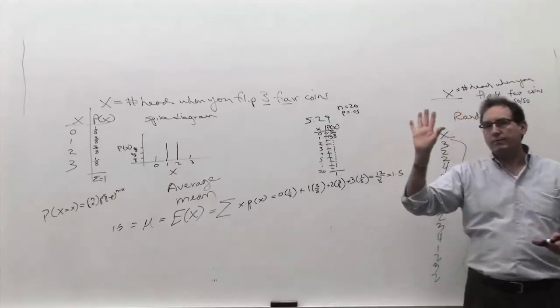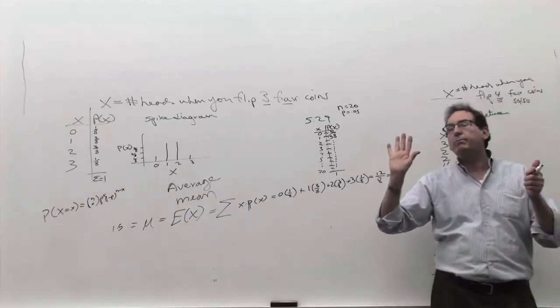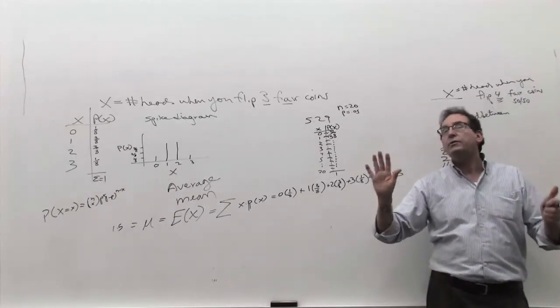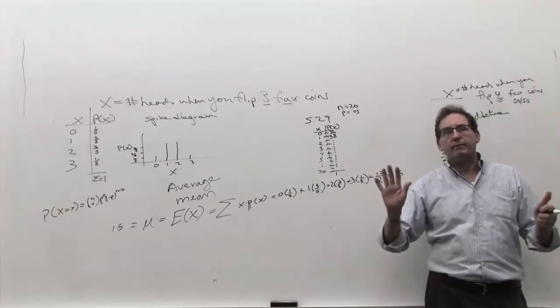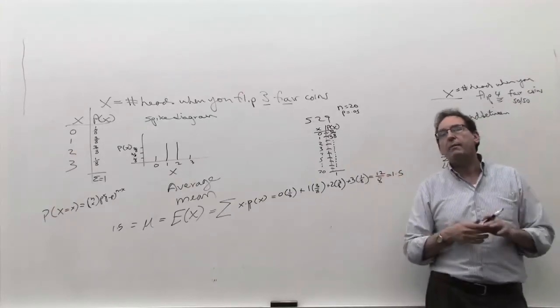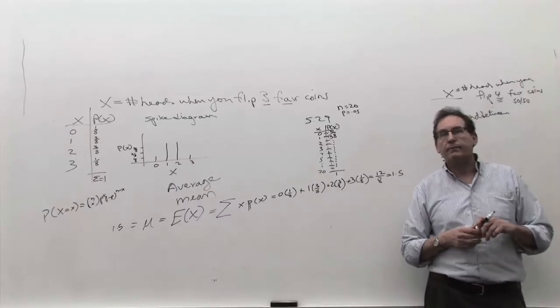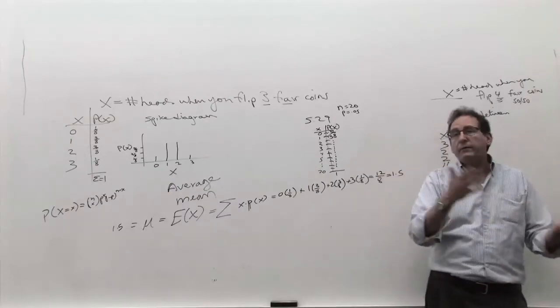If you're flipping 10 coins, and the chances of a head is 0.5, how many heads, literally, do you expect to get? Flipping 10 coins, the chance of a head is a half. How many heads do you expect to get? Five. Five. You expect to get five heads and five tails.